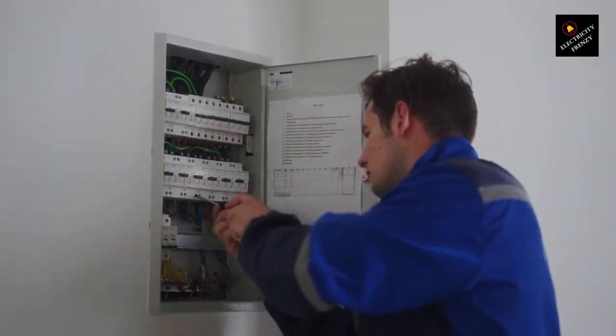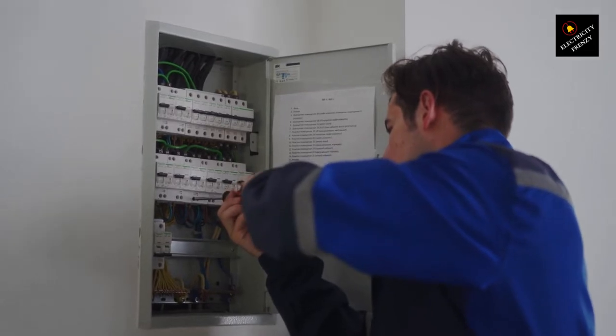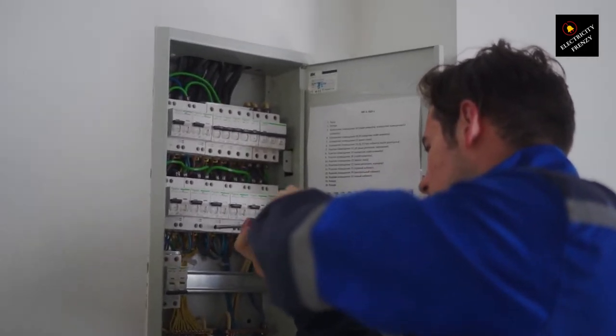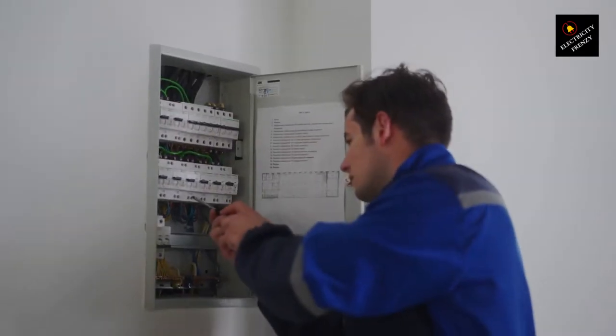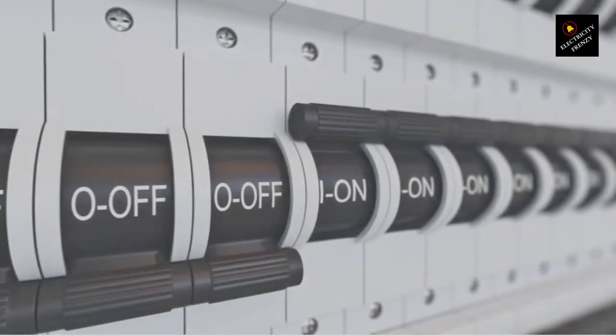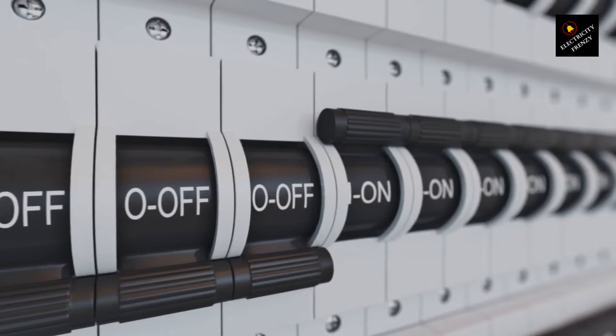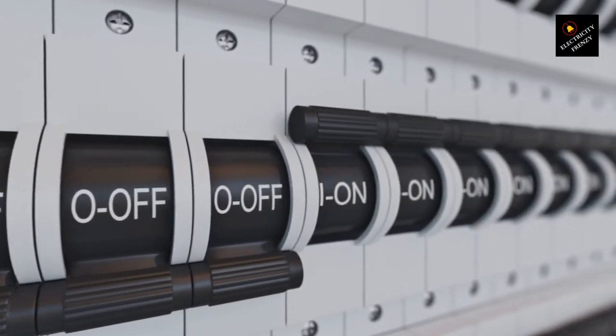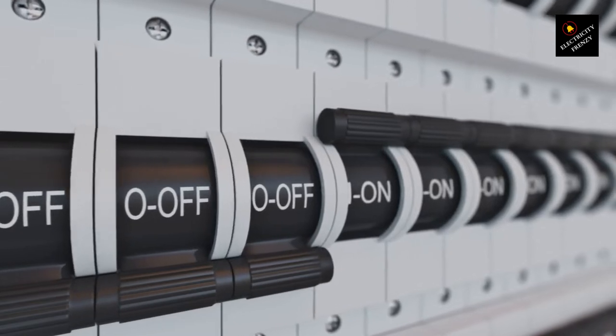Alright, the first thing you need to know is how to identify the cause of the tripped circuit breaker. Take a look at your breaker panel - you'll find labels indicating the circuits. If you're not sure which one is causing the problem, turn off all the appliances and lights connected to the circuit. Then, reset the breaker and gradually turn on devices one by one. This will help you pinpoint the culprit.